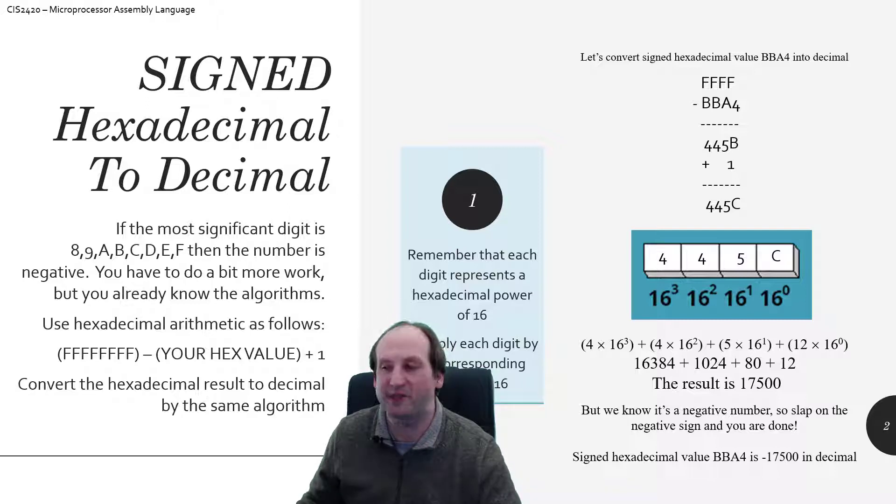So I get 4, 4, 5, B. I add 1 to that, and my end result would be 4, 4, 5, C. So again, BBA4 is a negative value.